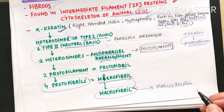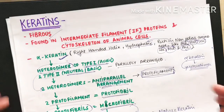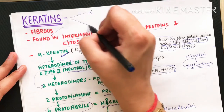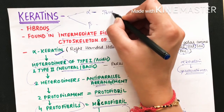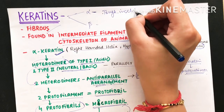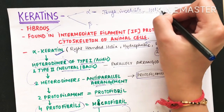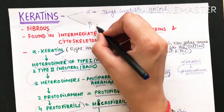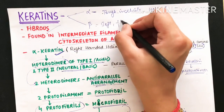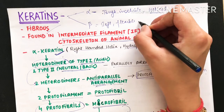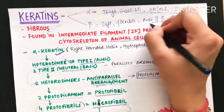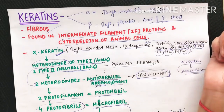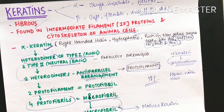Keratin has two types: alpha keratin, which is tough, insoluble, and helical in conformation; and beta keratin, which is soft, flexible, and has an anti-parallel beta sheet structure rather than a helical structure. If you found this video informative, please share, like, and subscribe to the channel.